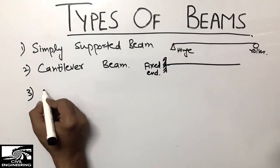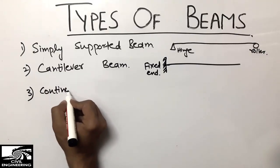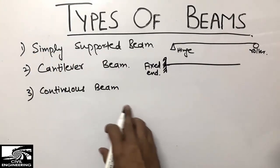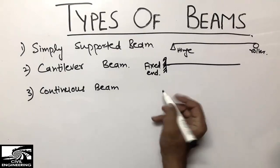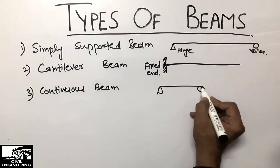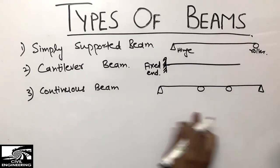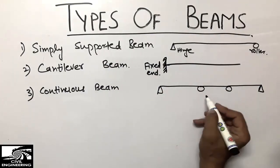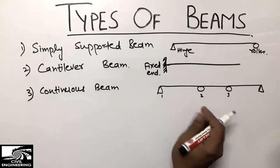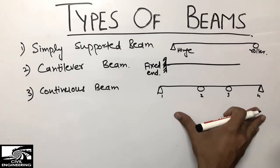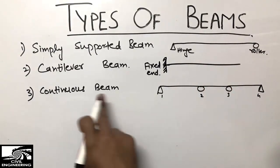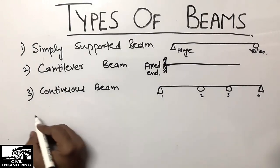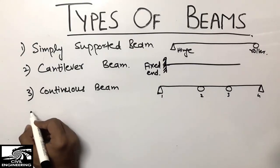The third type is the continuous beam. The continuous beam is the type of beam which is supported by more than two supports. If there are two supports we call it a simply supported beam, but if the beam is supported by more than two supports — like one, two, three, four supports — we call this type of beam a continuous beam. It may have hinge, roller, roller, and hinge supports.